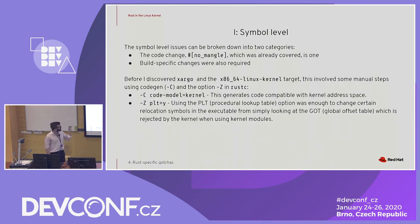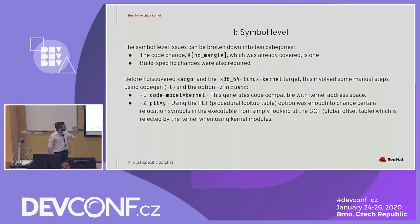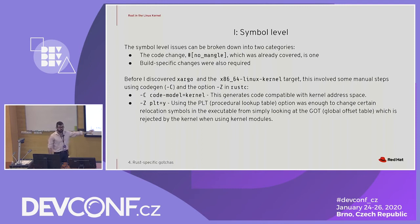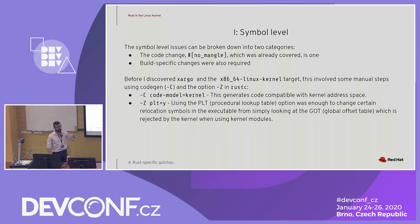At the symbol level, we've already touched on no_mangle, so we also need some build-specific changes. For example, if you're doing this all manually, you'll have to make sure that your code is compiled with some flags — for example, to put it in kernel address space and basically use the procedural lookup table instead of the global offset table, because of the nature of the kernel address space.